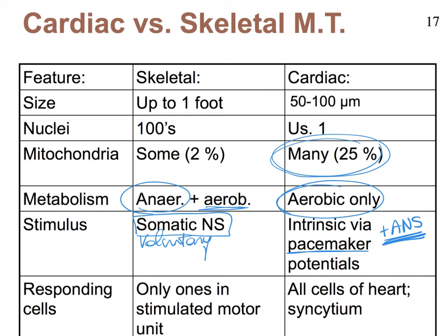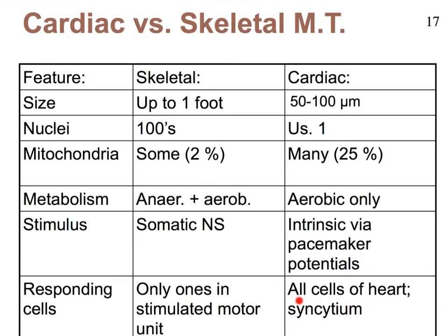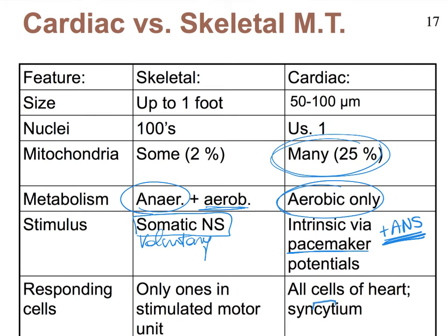The last row here where it says responding cells: remember that each skeletal muscle cell must receive its own axonal terminal, and consequently those muscle cells that receive stimuli from axonal terminals are the only ones that will contract. While in the case of the heart, the moment some cells have become depolarized the depolarization spreads and therefore all cells of the heart will ultimately contract. So the heart acts as what we call a syncytium — CYT referring to cell and syn meaning together — so all the cells work together to create the contraction.